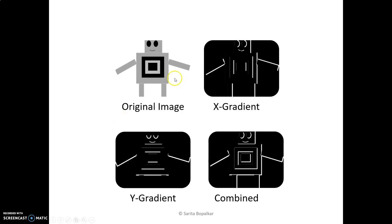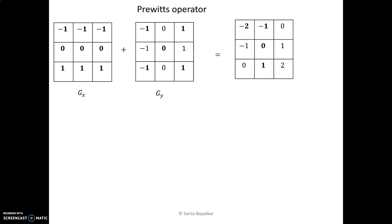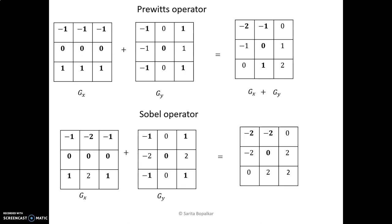Instead of adding the result of the x-directional gradient and y-directional gradient separately to get the combined result, we can add the masks. For the Prewitt operator, there is an x-directional gradient mask and a y-directional gradient mask — we can add these masks to get a combined result. Similarly, for the Sobel operator, we can add the masks. So instead of convolving the image separately with x-gradient and y-gradient masks and then adding, we can convolve the image with this combined mask to get both horizontal and vertical edges at once.